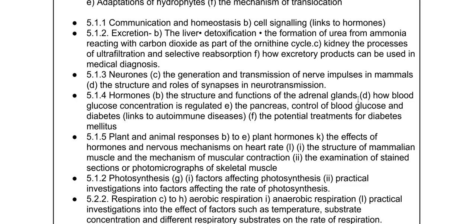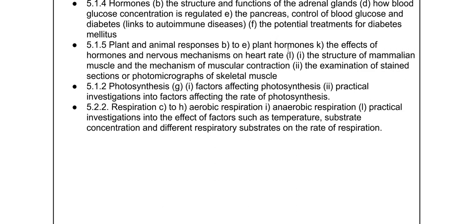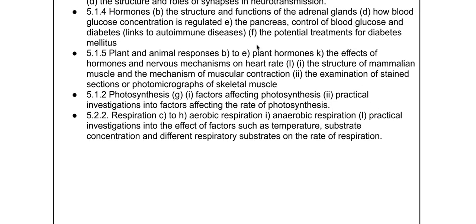In terms of hormones, they haven't asked about adrenal glands for ages — what is made from each part of the adrenal gland and the role of those hormones. Blood glucose concentration hasn't been asked about for a while either, including the pancreas — make sure you're familiar with microscope images of the pancreas, how blood glucose is controlled, and diabetes. Autoimmune diseases might link back to stem cells in their treatments. For plant and animal responses, any of the plant hormones could come up, and how nerves and hormones together impact heart rate could link to the adrenal gland content.